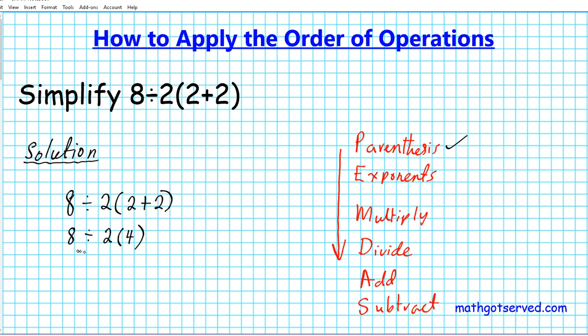Now what we're going to do next is take a look at this expression. We have 8 divided by 2 times 4. So if you look at the order of operations, what do you think we should do next?